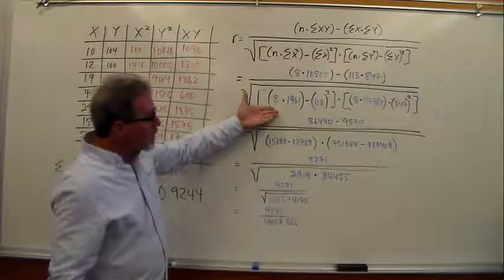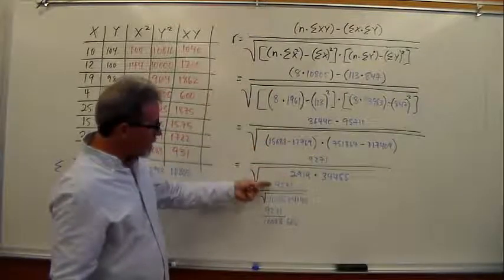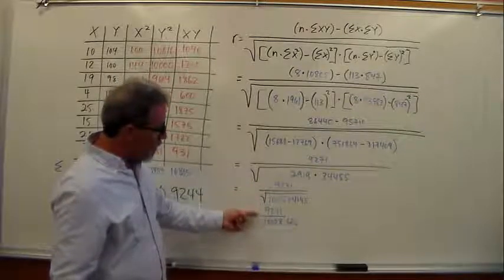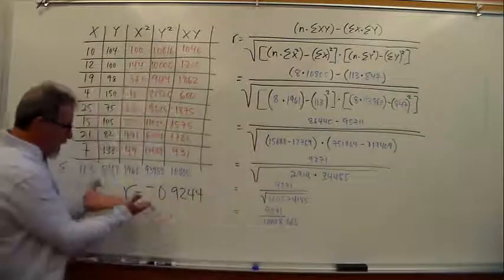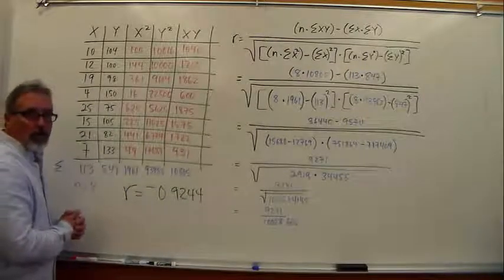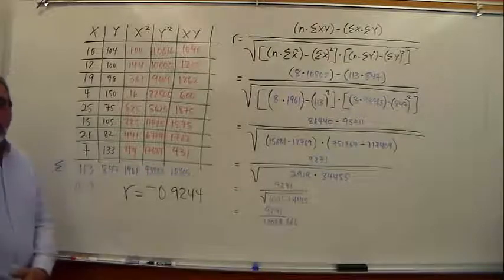That's what we did. Step right through here until we come all the way down to this 9271 divided by the square root of this huge number. We take that square root and we end up with an r coefficient of negative .9244. That is how you solve for the correlation coefficient.